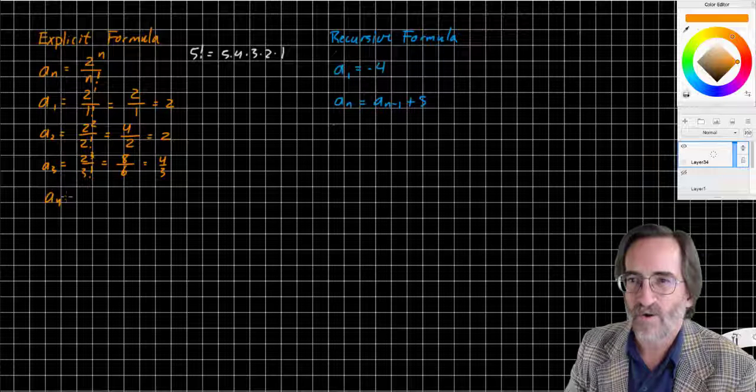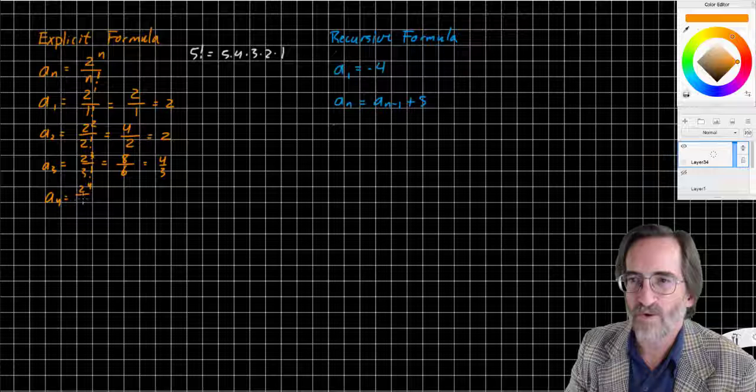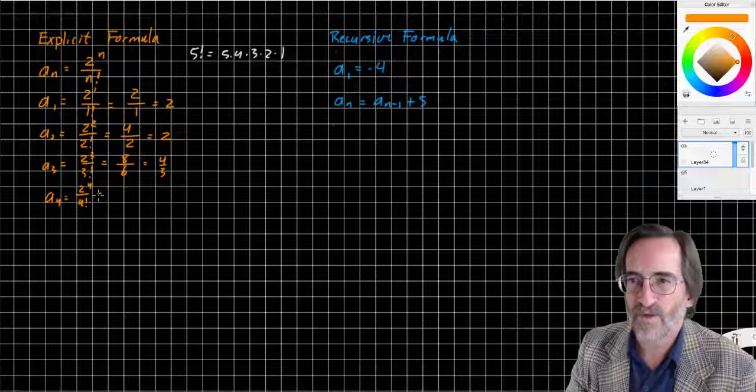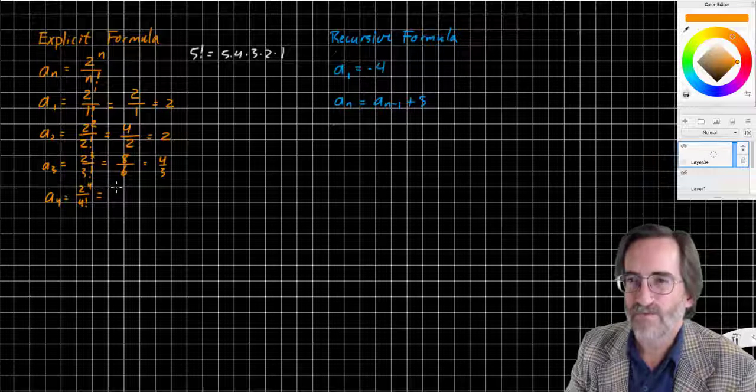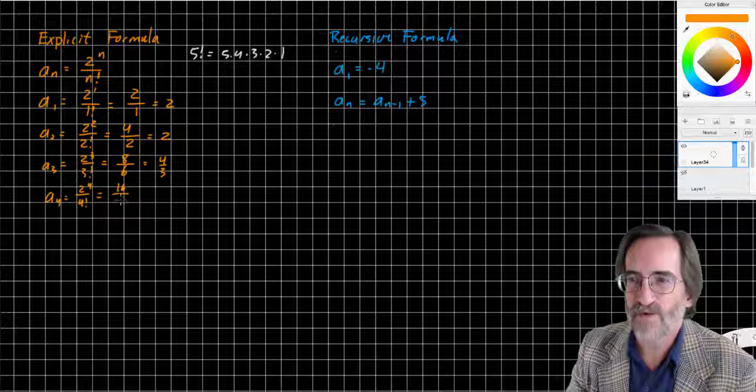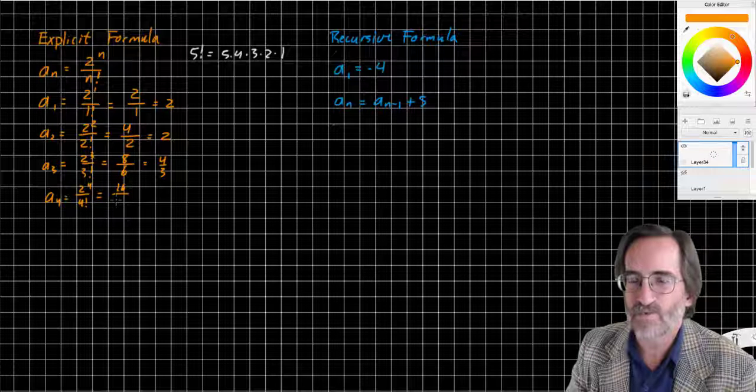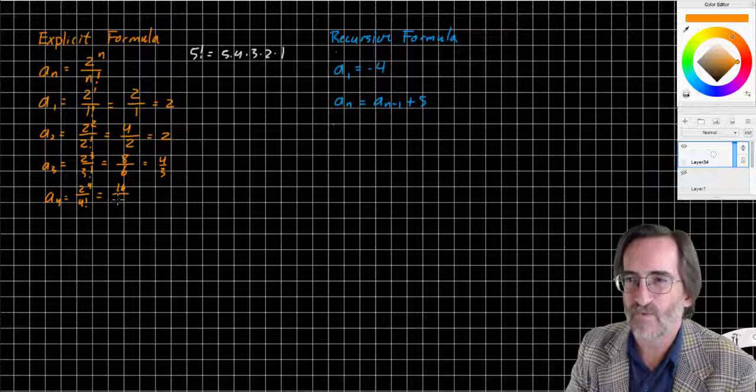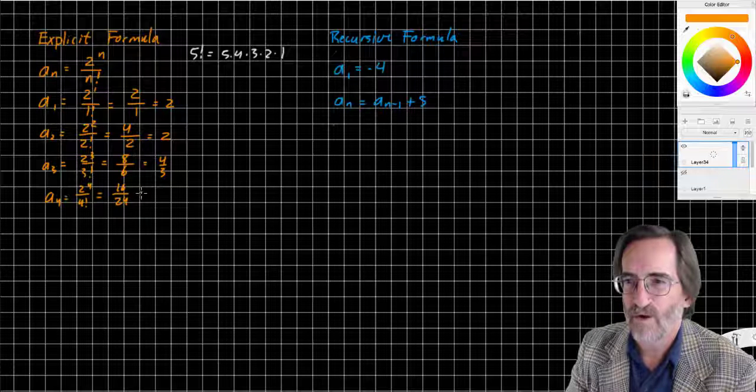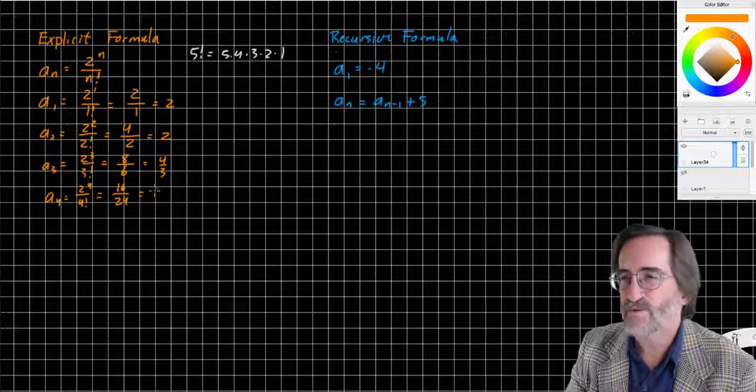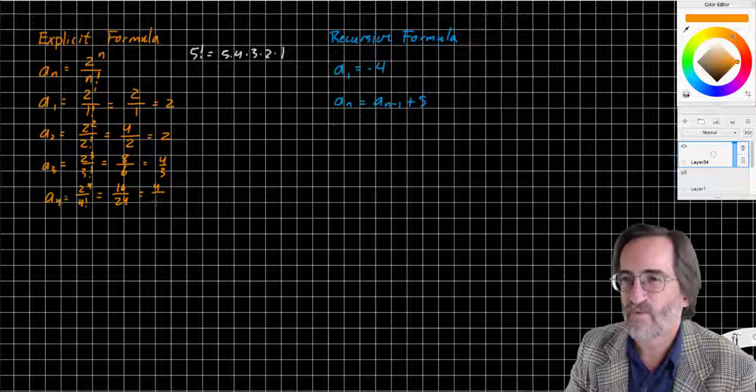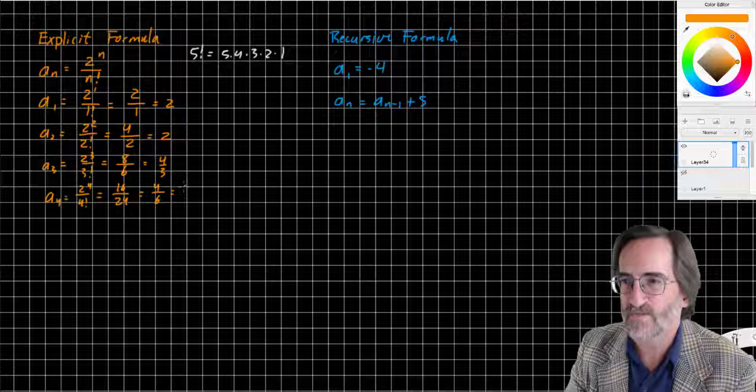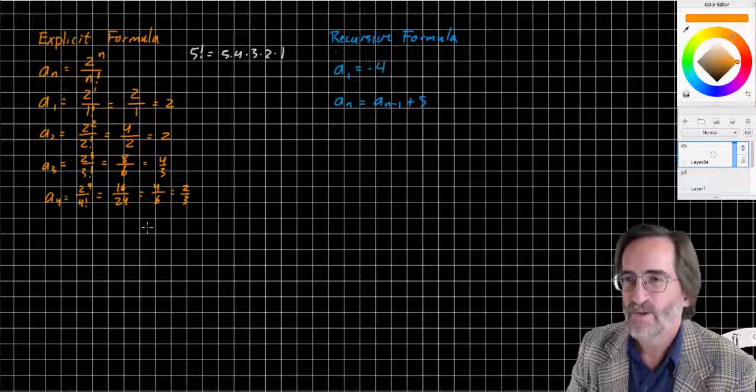And A sub 4, 2 to the 4th over 4 factorial. 2 to the 4th is 16. 4 factorial is 4 times 3 is 12 times 2 is 24 times 1 is 24. 16 over 24, reducing by 4 gives me 4 over 6, reducing by 2 gives me 2 thirds.